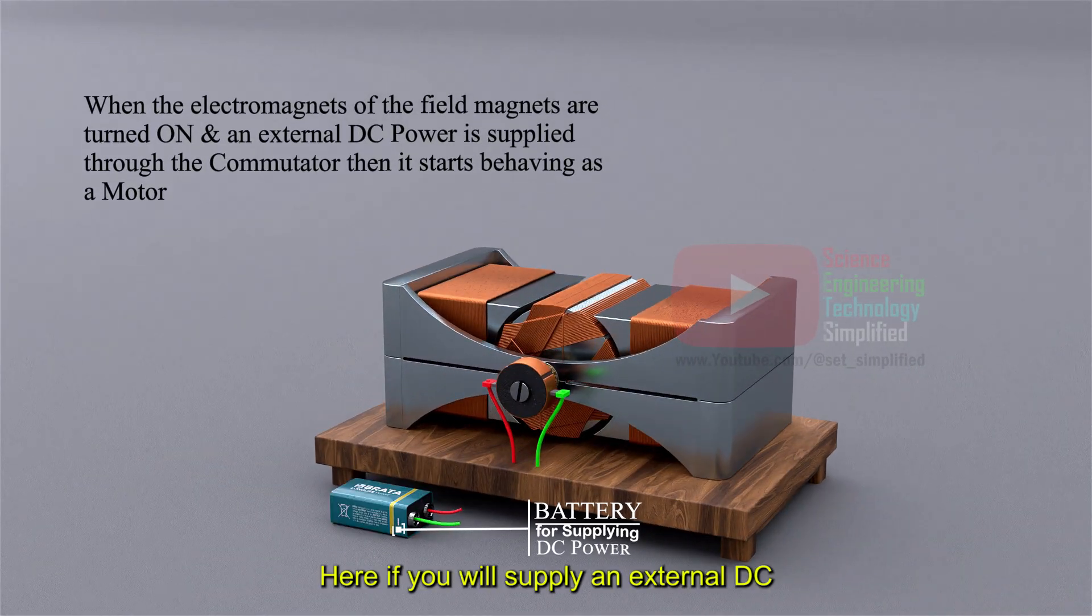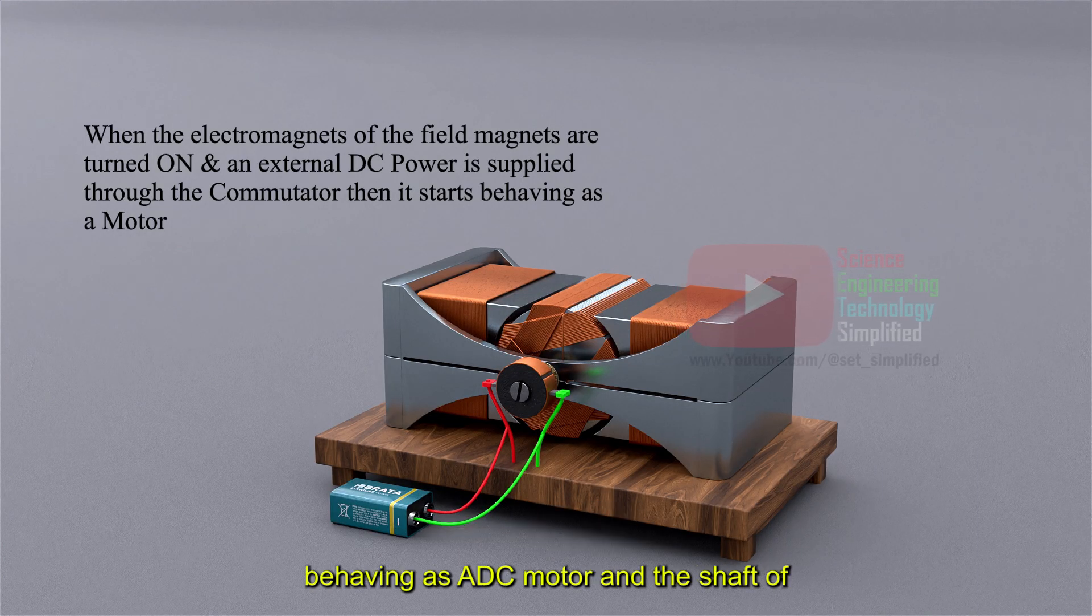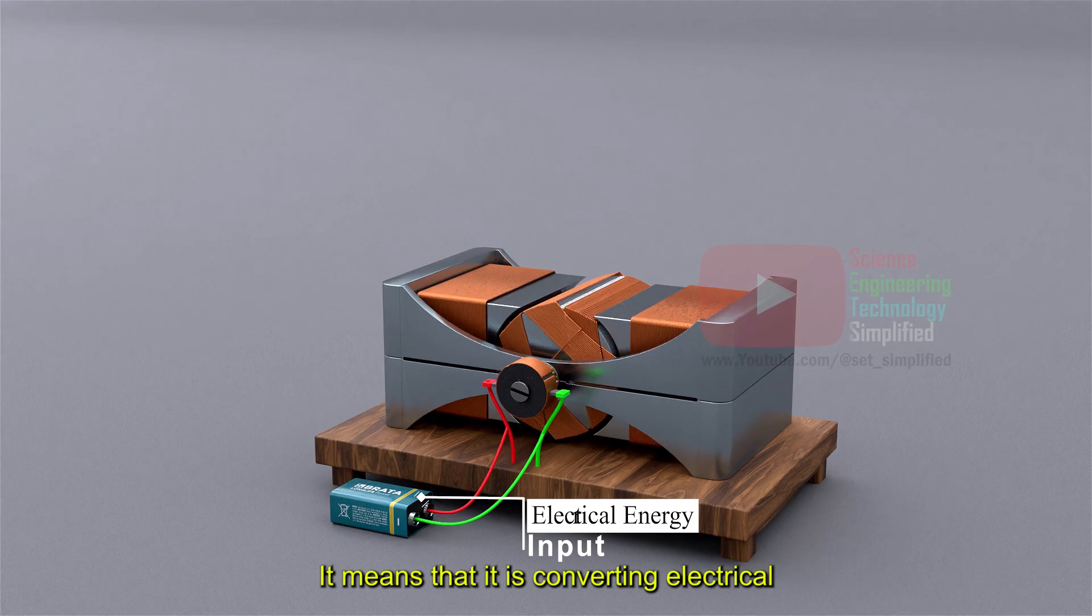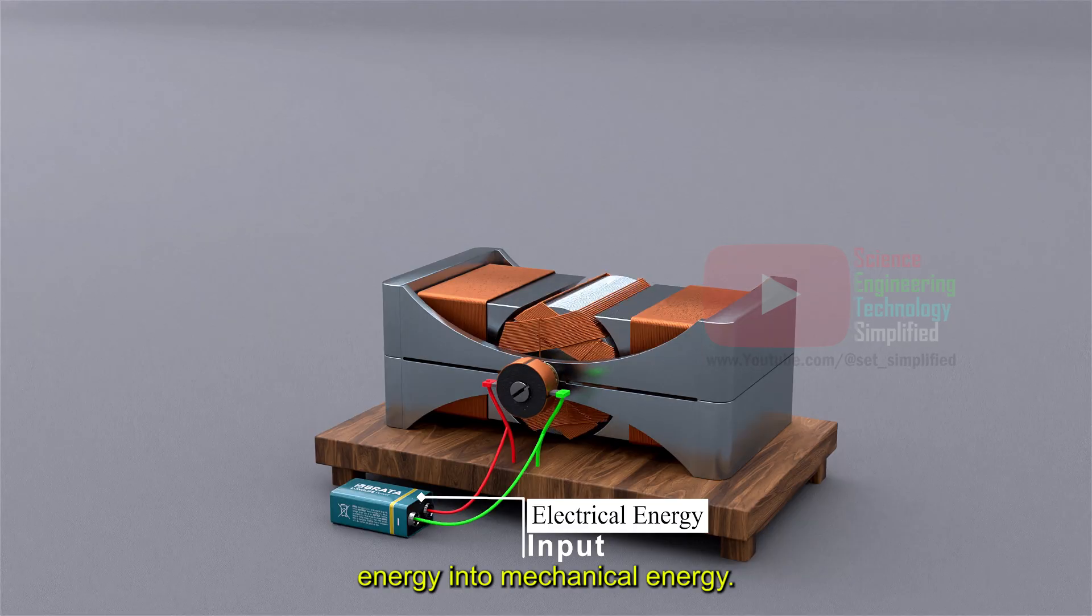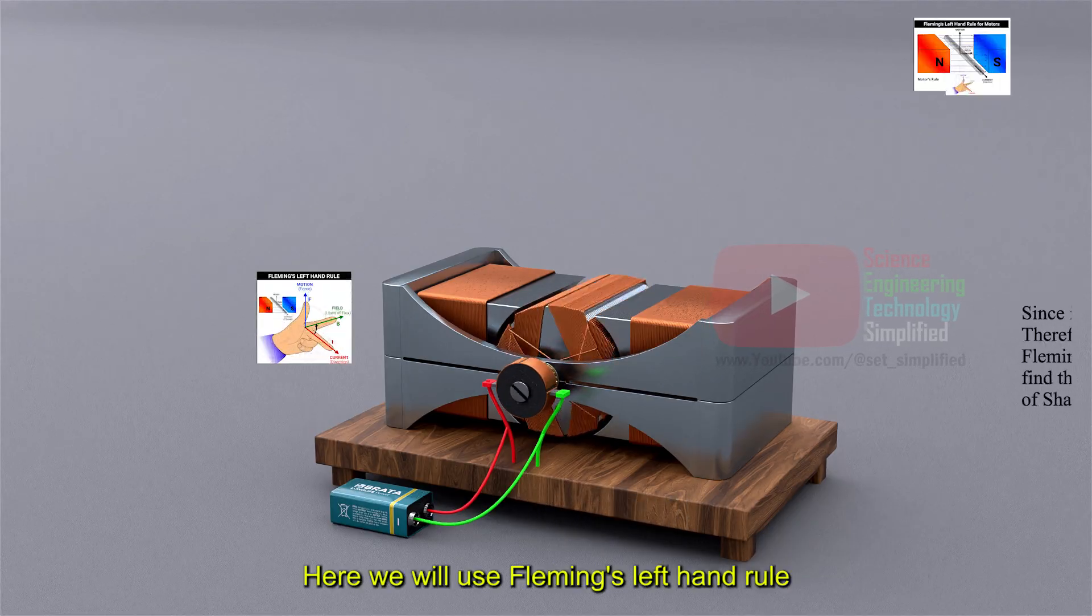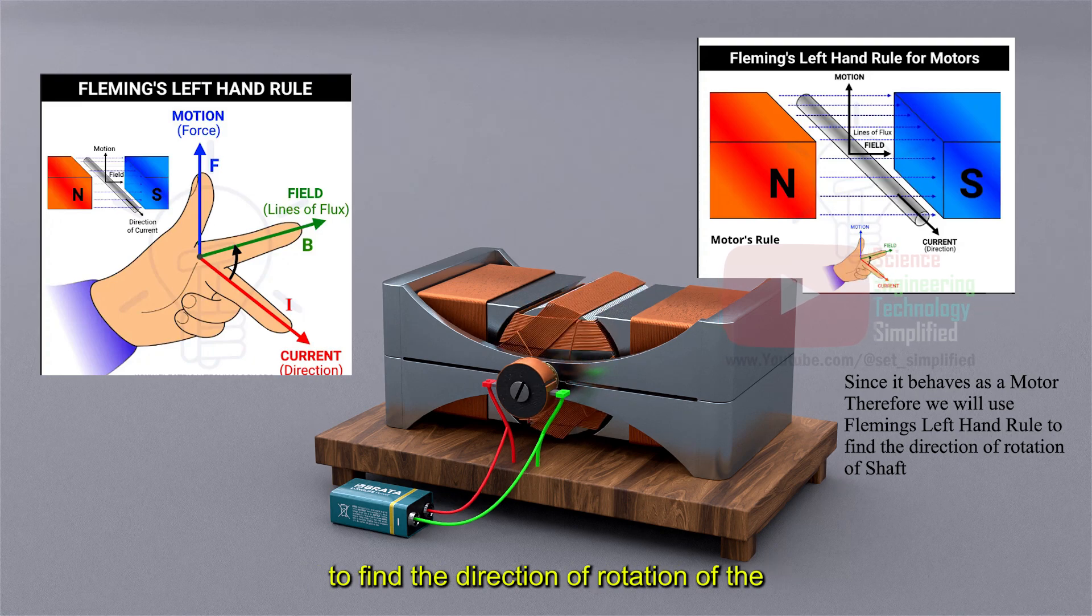Here, if you will supply an external DC power to the commutators, then it starts behaving as a DC motor and the shaft of the motor starts rotating. It means that it is converting electrical energy into mechanical energy. Here we will use Fleming's left-hand rule to find the direction of rotation of the shaft.